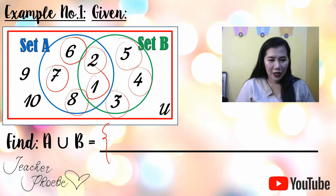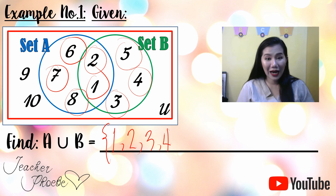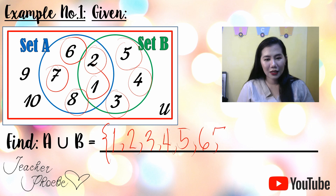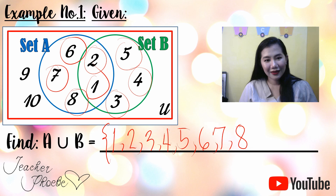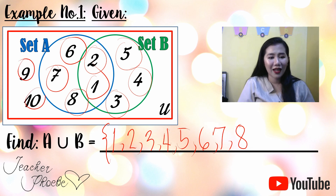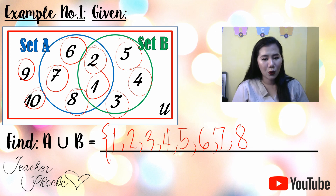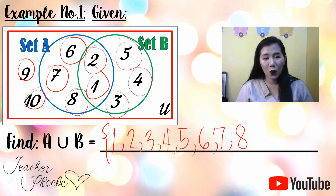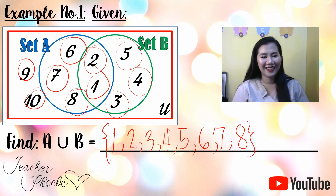So we write: one, two, three, four, five, six, seven, eight — all that we circled. Now, what about nine and ten? No, nine and ten are outside the two circles, so they are not included in the union of A and B. Therefore, that is the final answer.